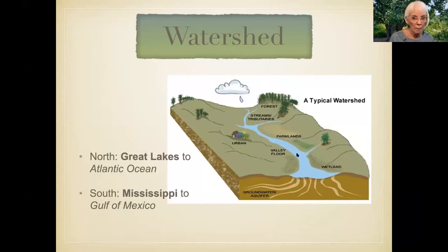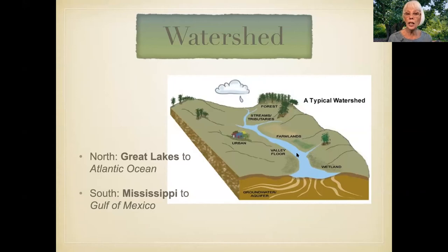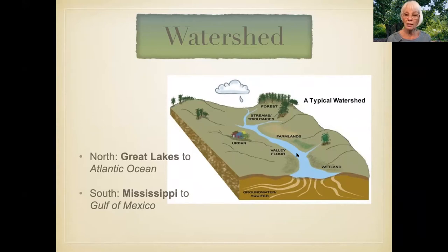Think back to the Valparaiso Moraine. If you've ever been at Gabis Arboretum at Purdue Northwest, formerly known as Talltree Arboretum, you have stood on the continental divide of the Valparaiso Moraine. If your house is north of that moraine, water in your watershed will flow northward to Lake Michigan, through the Great Lakes to the St. Lawrence, and finds the Atlantic. If your house is south of it, water will drain south, find the Kankakee, then the Mississippi, and find the Gulf — because water wants to find the ocean.